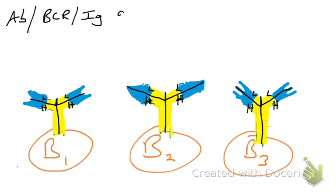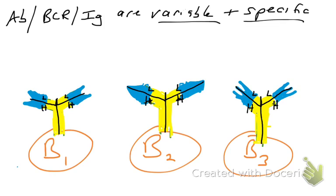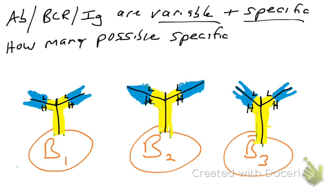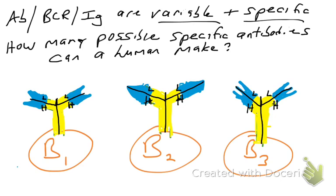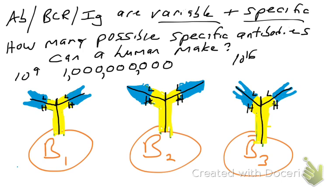This brings us back to the idea that B cell receptors, immunoglobulins, or antibodies are variable — they are different between all B cells. They can bind different molecules, but they're also specific: B cell one would bind something that B cells two and three wouldn't, and vice versa. When antibodies or immunoglobulins are generated by B cells, they are different between all B cells and specific for only certain epitopes. Through the process of VDJ or somatic recombination — randomly cutting and pasting together pieces of DNA — a human can practically generate about a trillion (10 to the 9th) different immunoglobulin molecules, with a theoretical limit of about 10 to the 16th.